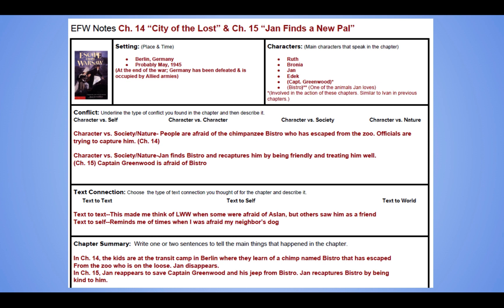Remember when we first meet Jan that he has the little gray kitten with him, and then the next time we meet Jan, he no longer has the kitten, but he has Jimpy the rooster. Of course, we know what happens to Jimpy, but I forgot to mention the lizard that Jan gifted to Ivan when he apologized — remember he had to apologize to get the boots before they left Warsaw. So, we got an insight into Jan. Jan has a thing for animals.